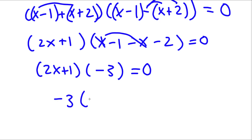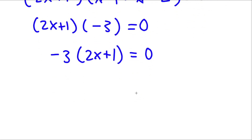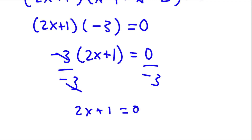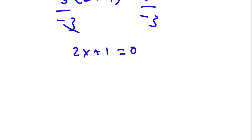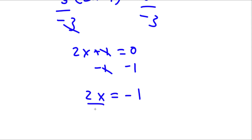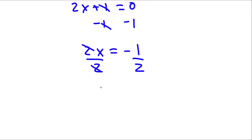I can write this as negative 3 times 2x plus 1 is equal to zero. Now if I divide both sides by negative 3, these two cancel out, and I'll be left with 2x plus 1 is equal to zero. As you can see, this is a pretty simple equation. All I have to do is subtract 1 on both sides — these two cancel out — and I'll be left with 2x is equal to negative 1. Now I divide 2 on both sides, these two cancel out, and I have x is equal to negative 1 half.